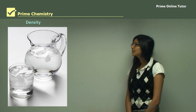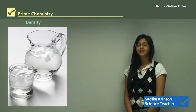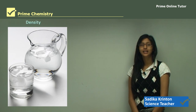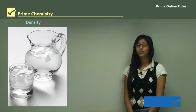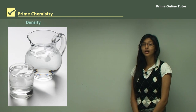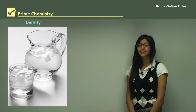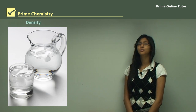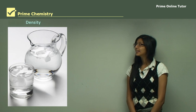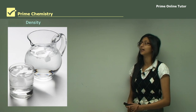Hi everyone. Today we are looking at the topic of water, and in this topic we will look at the term density. First we will define what density is, then look at the density of water. As you will find in this lesson, there is a very unusual property about the density of water, and then we will look at how that helps life on earth to survive.